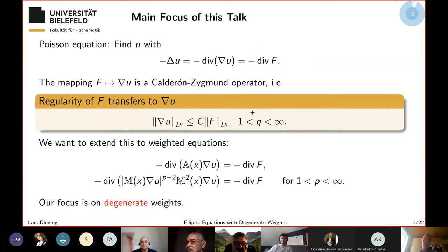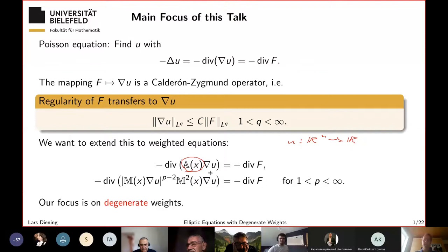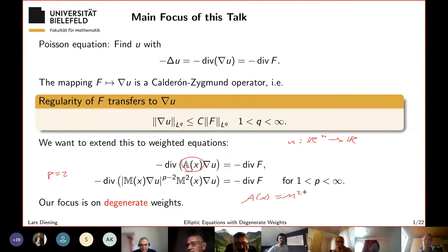What we want to do is generalize this theory for the simple Laplace equation to weighted equations. We insert a kind of weight, which is a matrix-valued weight: A(x) is a matrix multiplied by the vector gradient u — scalar equations from Ω or R^n to R. We also want to look at the nonlinear equations arising from weighted p-Laplace equations. If p equals 2, they are both the same if you switch from A(x) to M²(x). In particular, we are interested in allowing degenerate weights — weights that are allowed to go to infinity and zero in a certain fashion, degenerating at points or lines.